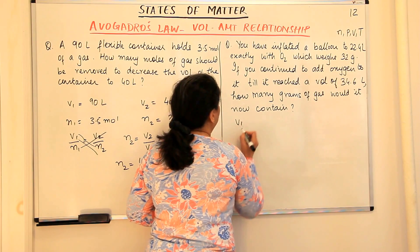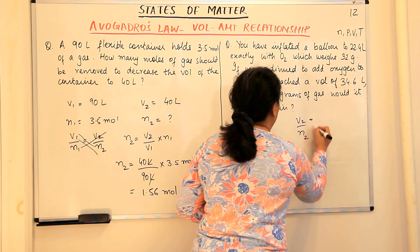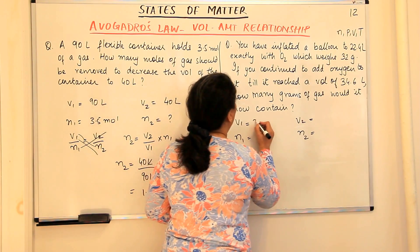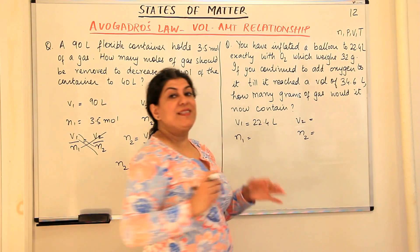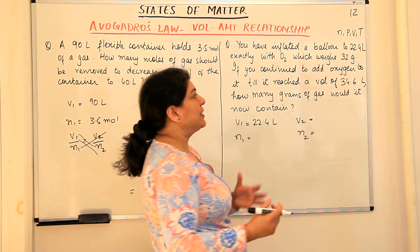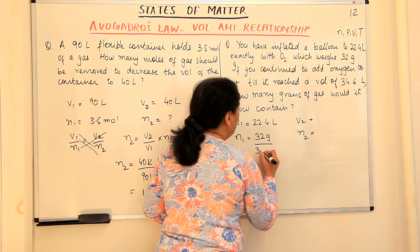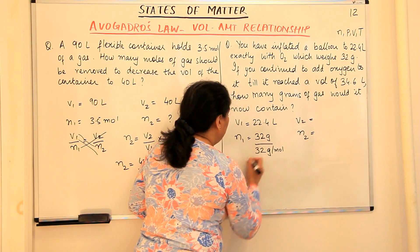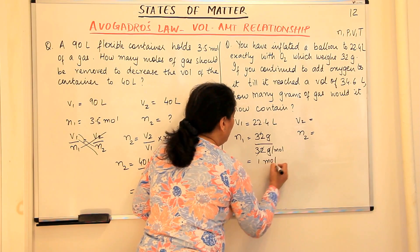V₁ = 22.4 liters. To find N₁: number of moles = mass / molar mass = 32 g / 32 g·mol⁻¹ = 1 mol. So N₁ = 1 mol. V₂ = 34.6 liters and N₂ is to be found. Using V₁/N₁ = V₂/N₂, rearranged as N₂ = (V₂/V₁) × N₁.